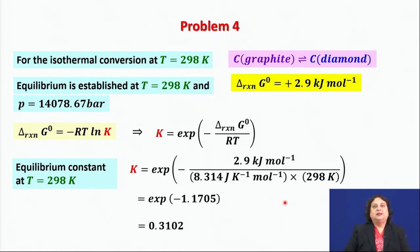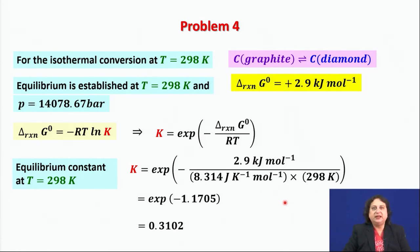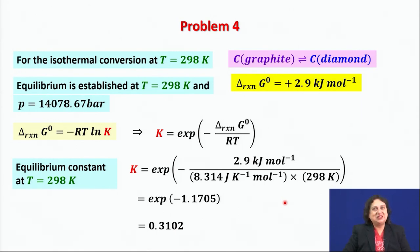As we can see, the synthesis of diamond from graphite is not a commercially viable solution at 298 Kelvin. The reaction is non-spontaneous and the yield is very small. Unfortunately, however precious diamonds may be, you cannot produce diamond from graphite at room temperature.